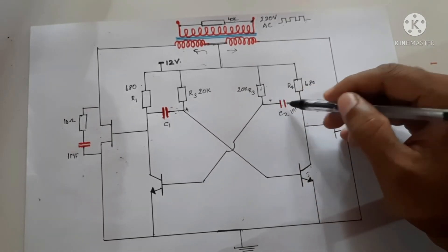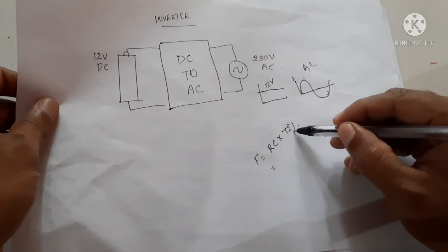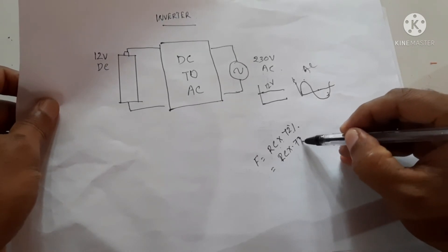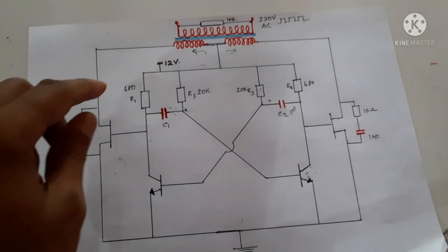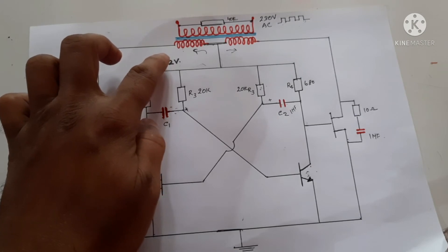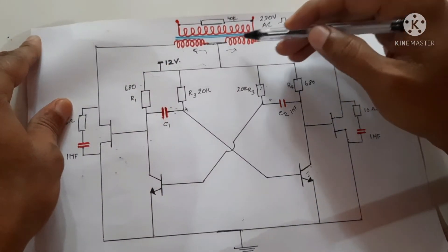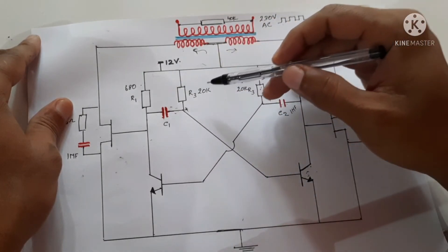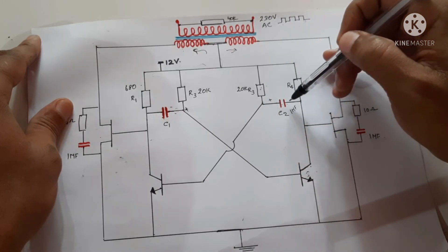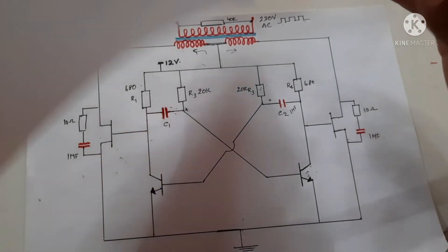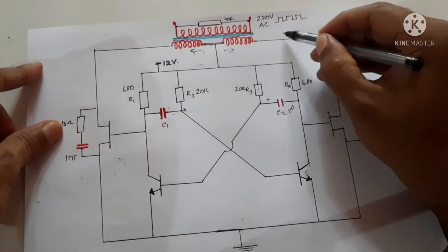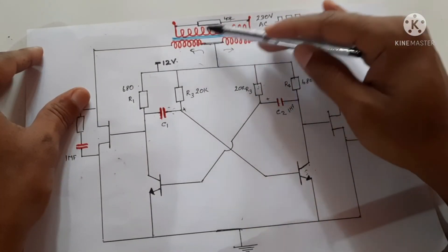By calculating the RC value — R is the resistor and C is the 1 microfarad capacitor — and multiplying by 0.72, we get the frequency. One drawback of this circuit is that as we draw power, the battery voltage decreases. When the battery voltage decreases, the resistor-capacitor combination takes more time to charge, so the frequency decreases, and the output voltage also decreases.